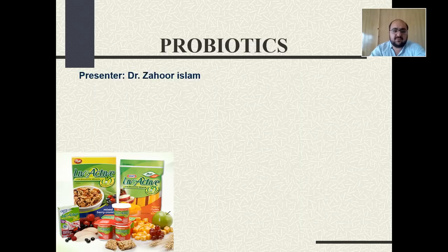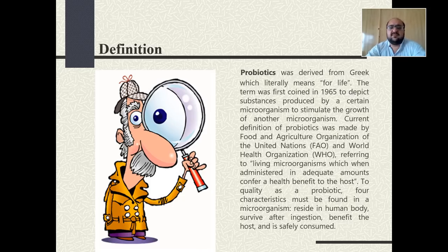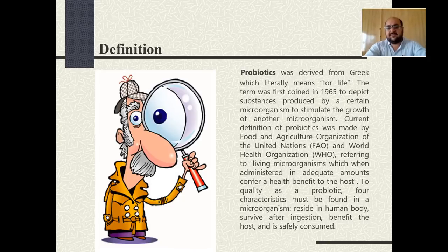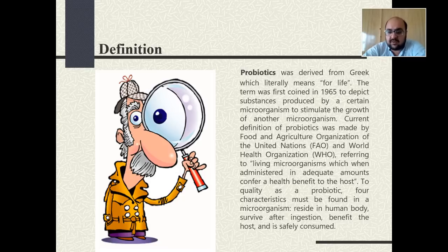So what is probiotics? Probiotics can be defined — probiotics was for the first time derived from a Greek word which literally means 'for life.' The term was first coined in 1965 to denote the substances produced by certain microorganisms to stimulate the growth of another microorganism.